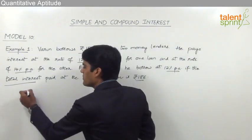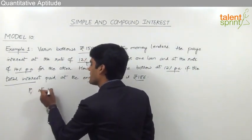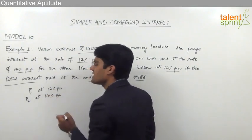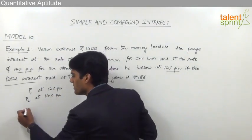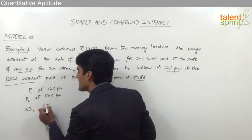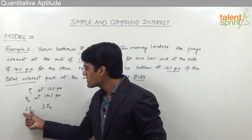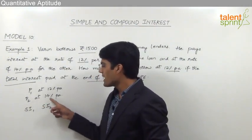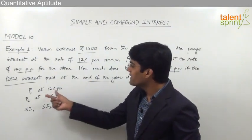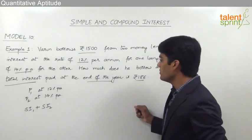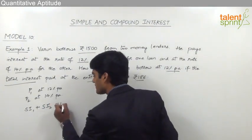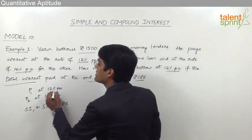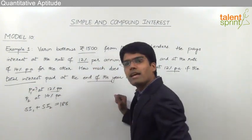Let us assume that Varun has borrowed P1 at 12% per annum and P2 at 14% per annum. Let us assume that the simple interest on the first loan is SI1 and the simple interest on the second loan is SI2. That means simple interest on P1 at 12% per annum is SI1, and simple interest on P2 at 14% per annum is SI2. We also know that the total interest, SI1 plus SI2, is equal to Rs 186. We need to find P1.